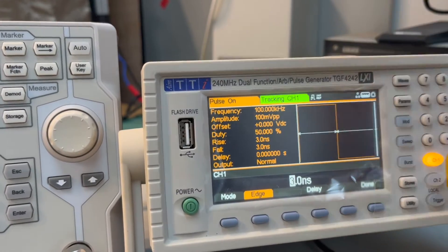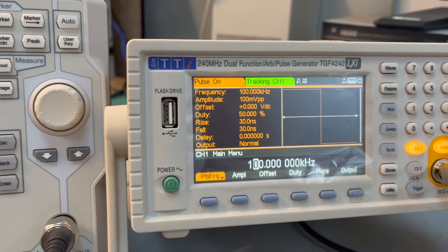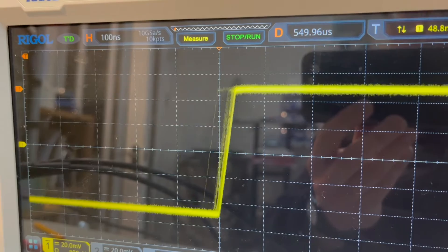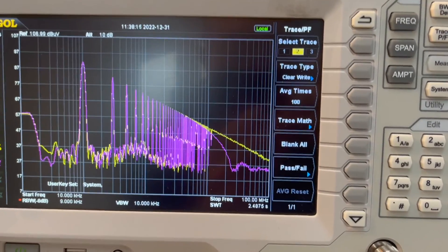Now if I change the rise time to be 30 nanoseconds, by an order of magnitude. So everything else is the same, except that the rise time change from 3 to 30 nanoseconds. Now this is the result.